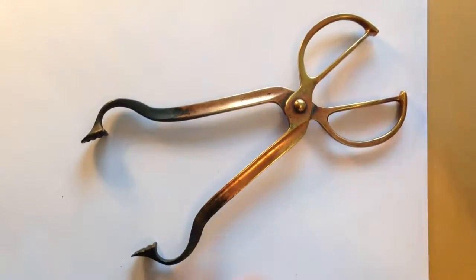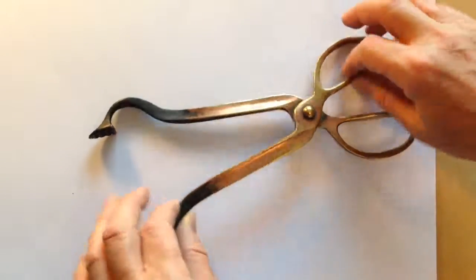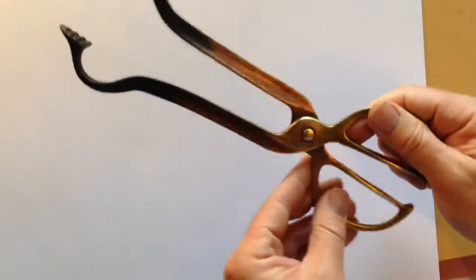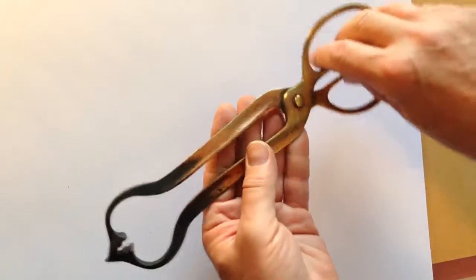And they have this lovely arts and crafts sinuous flow, slightly thinner here. They're a little bent, but that's all part of their history. They sort of juggle slightly there, but it doesn't matter if you're picking up lumps of coal.